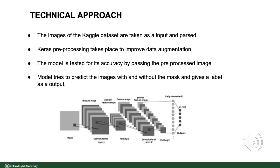The images of the Kaggle dataset are taken as input and passed through Keras pre-processing to improve data augmentation. The model is then tested for its accuracy by passing the pre-processed image. The model tries to predict images with and without the mask and gives a label as output.